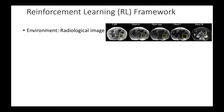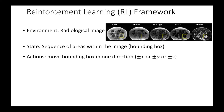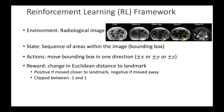The reinforcement learning framework in this paper consists of the following. The environment is a radiological image. The state is a sequence of areas within the image delineated by a bounding box. Possible actions include moving the bounding box in one direction within the image. The reward is the change in Euclidean distance from the center of the bounding box to the target landmark. Training agents used Q-learning with experience replay.